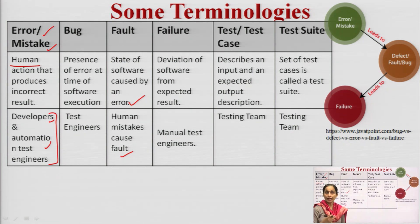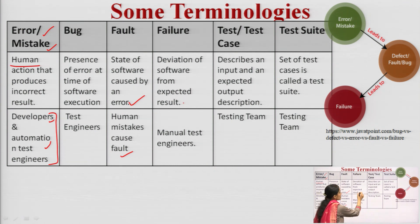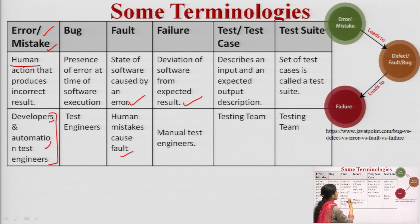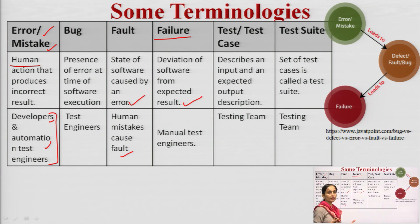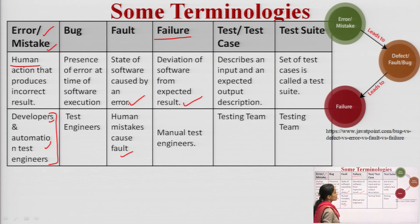Then there is failure. When the software deviates from the expected result, that leads to failure. It can be small, or it can be so large that my entire software fails. Manual test engineers use this term.